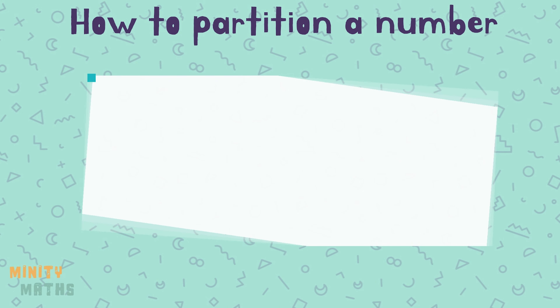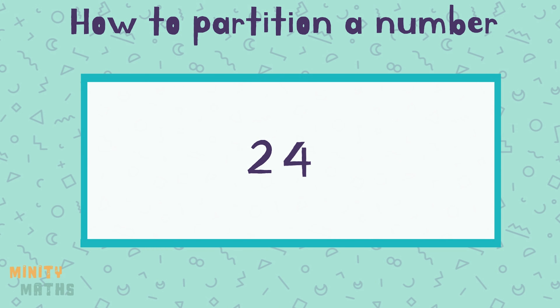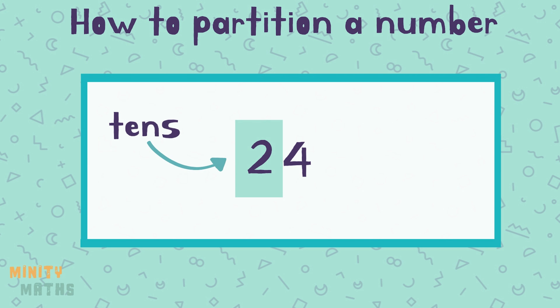To partition a number, we break it down according to its place value. For example, a two-digit number consists of tens and ones, so we can break this number down into tens and ones.